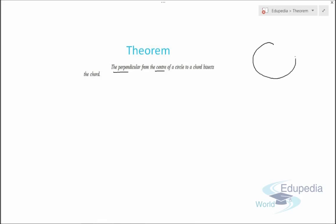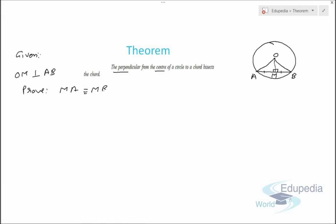To prove this theorem, let's draw a circle with center O and a chord AB. We draw a perpendicular OM from center O to chord AB, where M is the foot of the perpendicular. So this angle is 90 degrees. It is given that OM is perpendicular to AB, and we need to prove that MA equals MB.